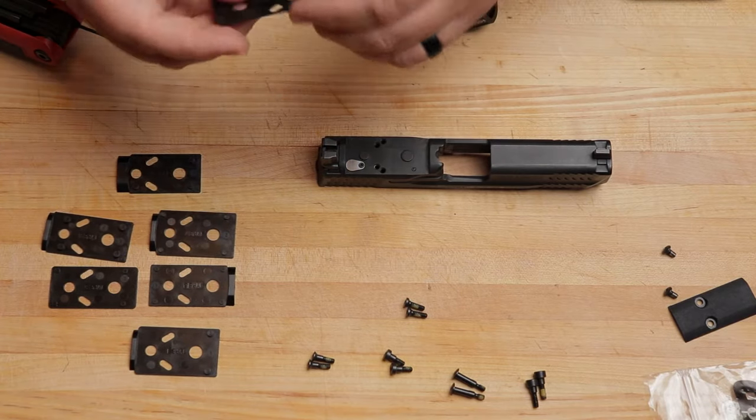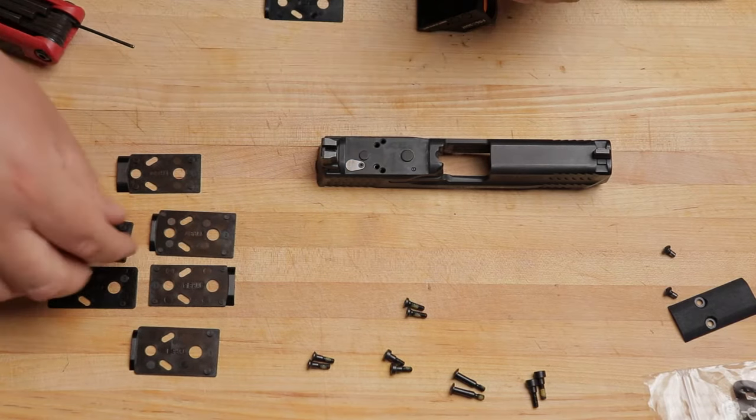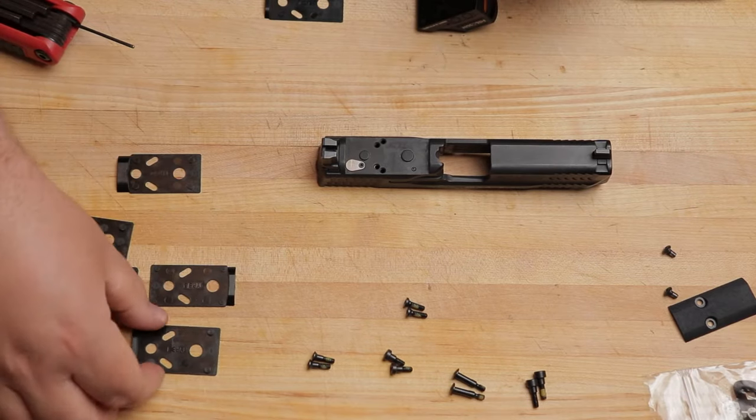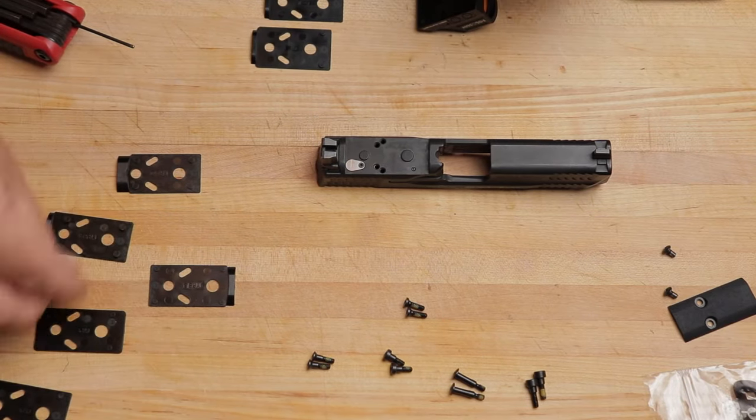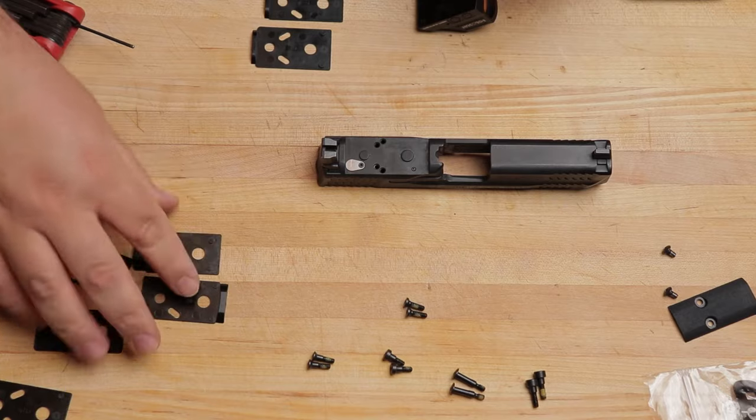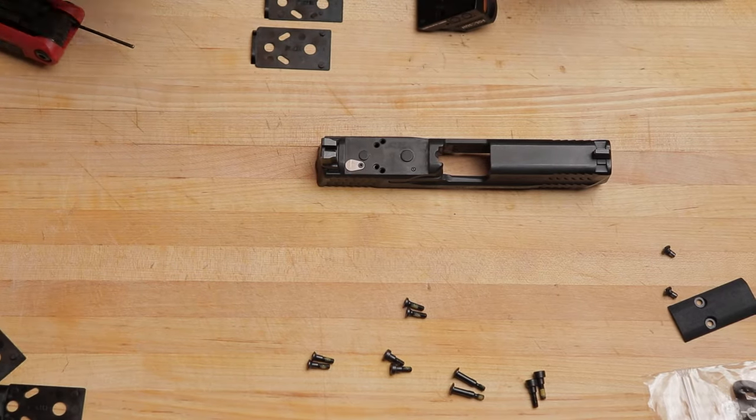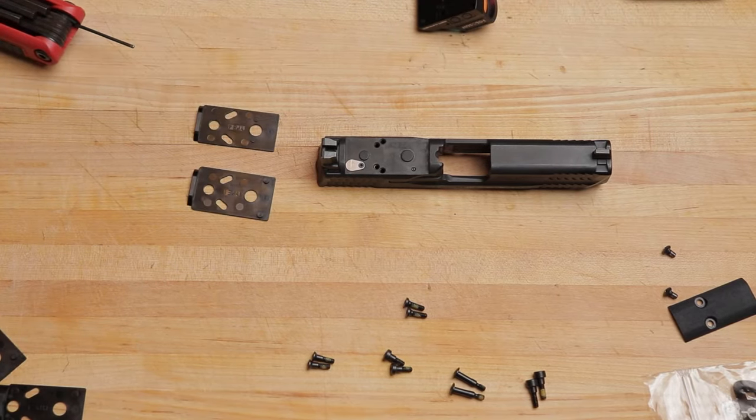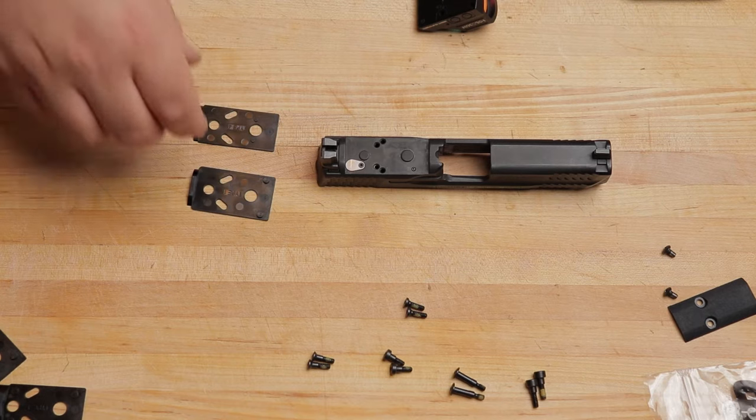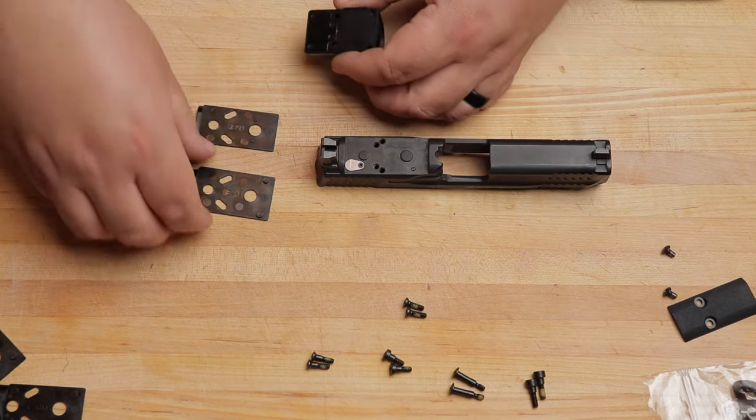So, right there, we can already look at all these plates, find the ones that only have two studs on them. So, we've got one here that has two, and we got, that's four, this one's two, and these are all four. So, we're gonna set those aside, and just like that, we've already narrowed it down to two.